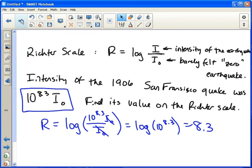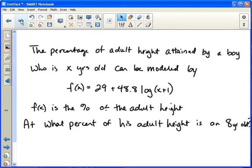Quickly, I want to look at one other log example. And that's one that can model someone's height. The percentage of adult height attained by a boy who is x years old can be modeled by f(x) equals 29 plus 48.8 log of (x+1). So our f(x) in this case is the percent of the adult height. So once f(x) equals 100, that means the person is their full height. Or if f(x) was 50, that means they're half their adult height.